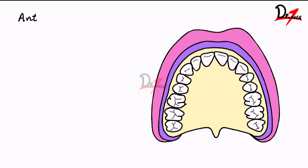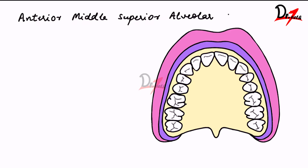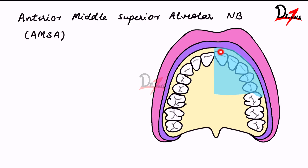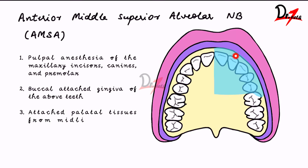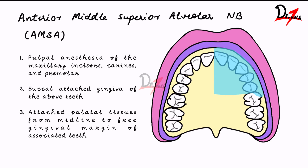The next one is the anterior middle superior alveolar nerve block, or AMSA. As you can see, it anesthetizes the entire palatal as well as the buccal aspect of the anterior teeth. It provides pulpal anesthesia of the maxillary incisors, canines, and premolars; buccal attached gingiva of these teeth; and attached palatal tissue from the midline to the free gingival margin of the associated teeth.